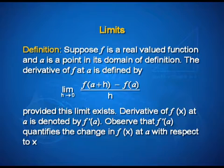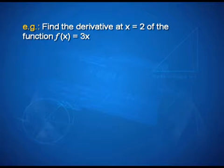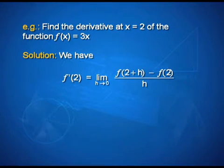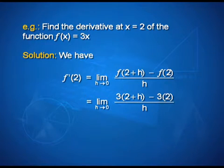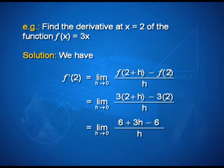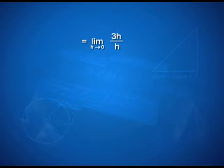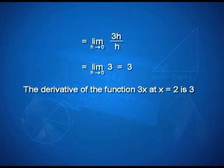Now let us solve an example. Find the derivative at x=2 of the function f(x)=3x. We have f'(2) = limit of f(2+h) minus f(2) upon h as h tends to 0. That is equal to limit of 3(2+h) minus 3(2) upon h as h tends to 0, which simplifies to limit of 3h upon h as h tends to 0, that is limit of 3 as h tends to 0, which equals 3. The derivative of the function 3x at x=2 is 3.